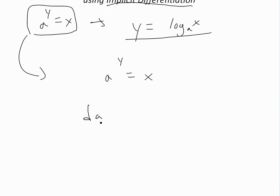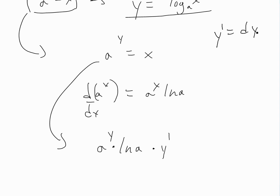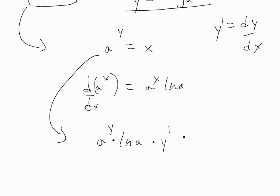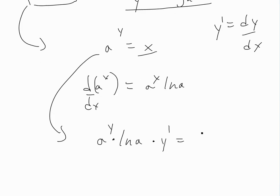We know that the derivative of a^x is a^x · ln(a). Applying that here with implicit differentiation and the chain rule, the left side becomes a^y · ln(a) · y′, where y′ is dy/dx. The right side — the derivative of x — is just 1.